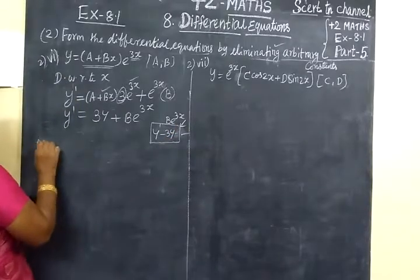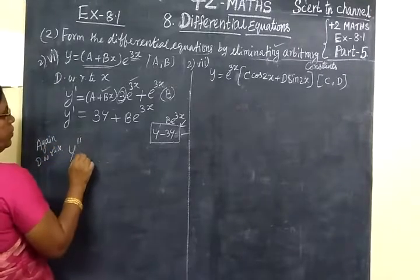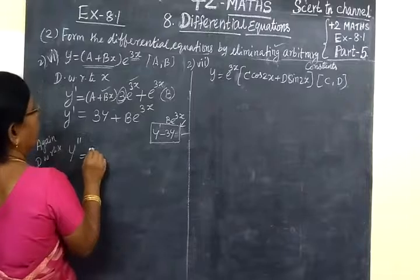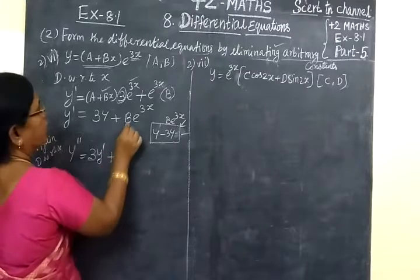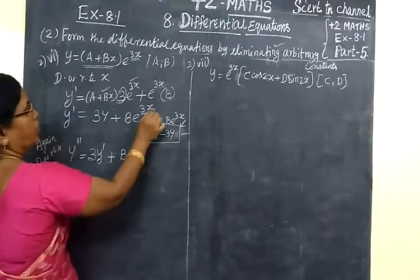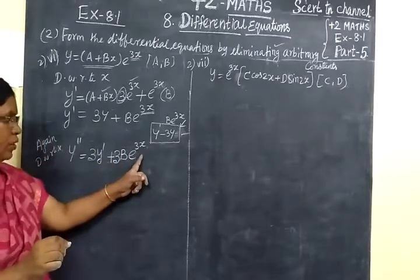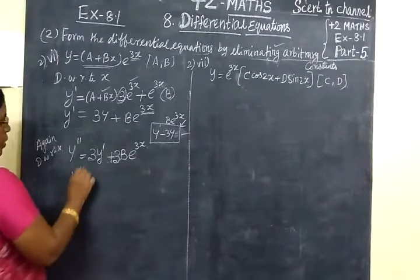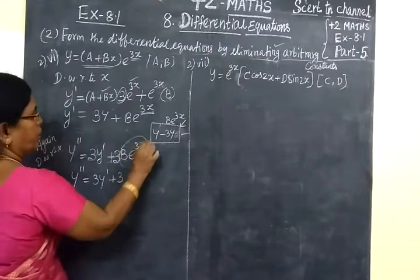So next, again differentiate with respect to x. So y double-dash: y dash is not the differentiation yet — y double-dash. This is equal to 3y dash plus B. Now we see e^(vx) equals 3x — not a differentiation — into 3y is automatically applied and we carry this forward from the beginning. So y double-dash equals 3y dash plus 3.